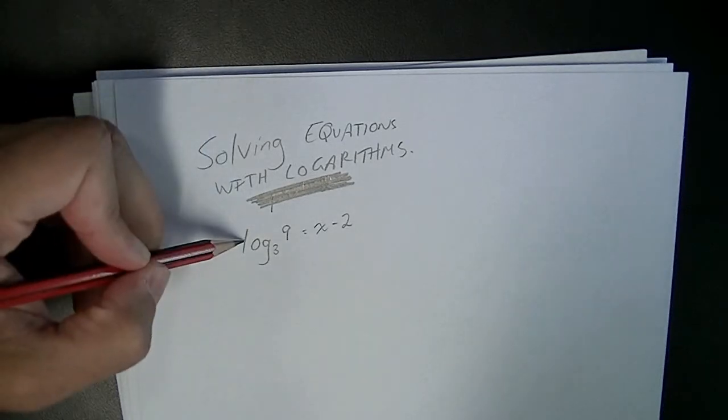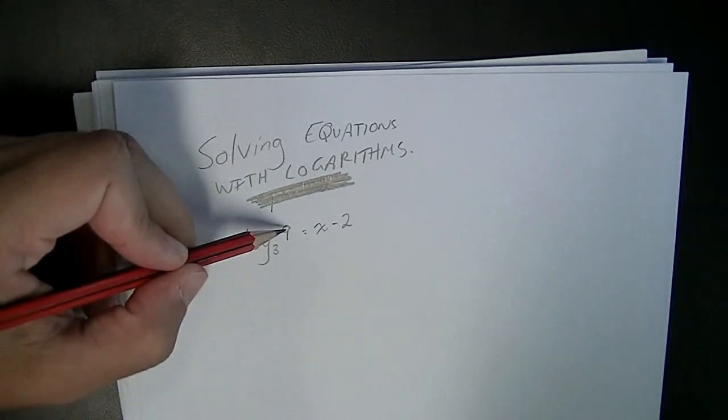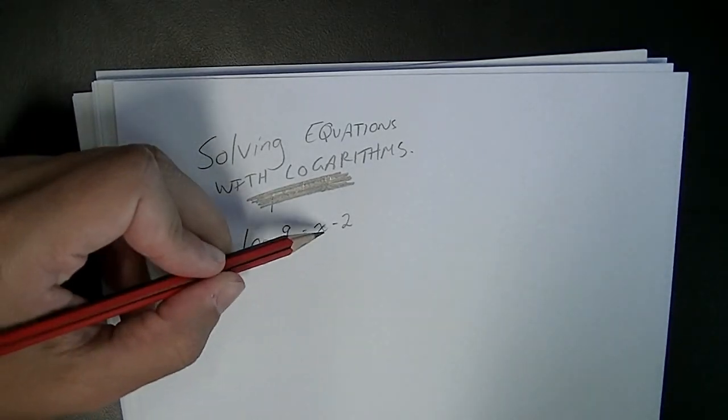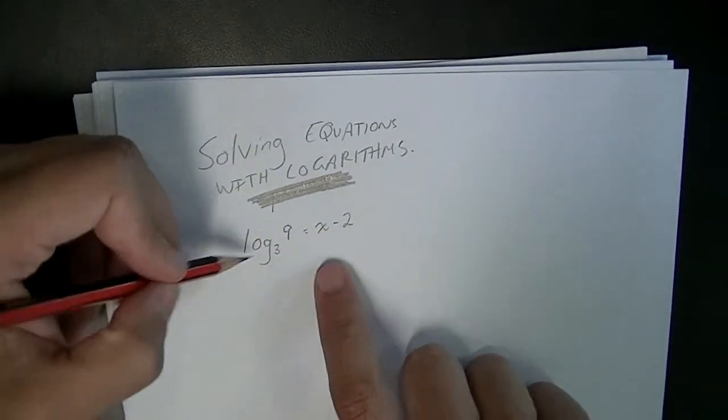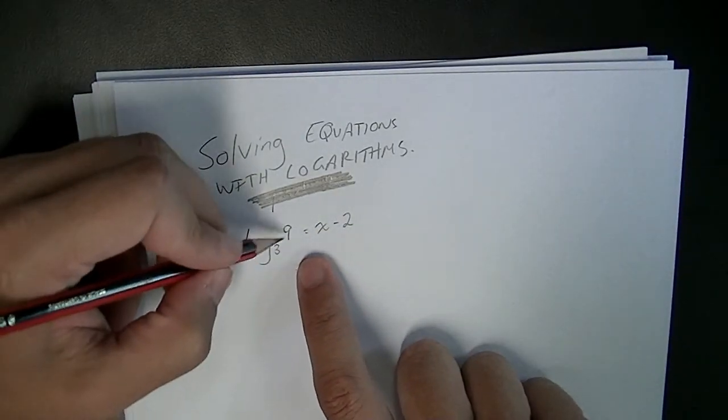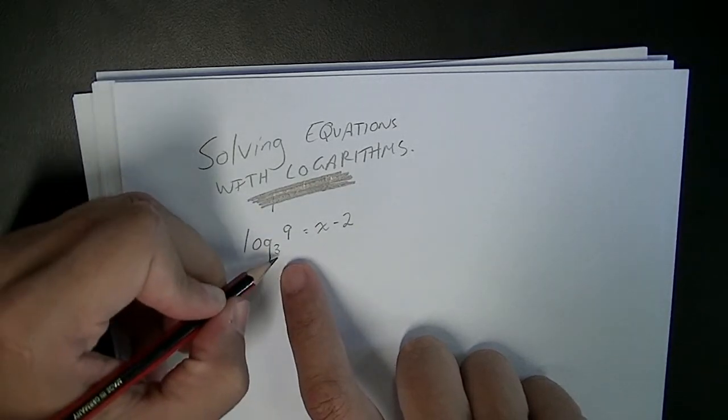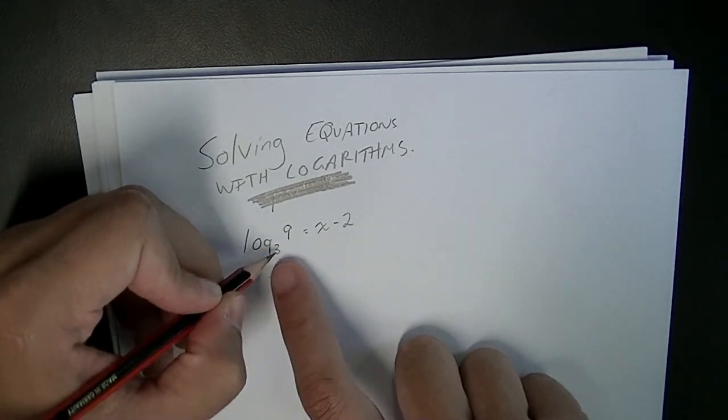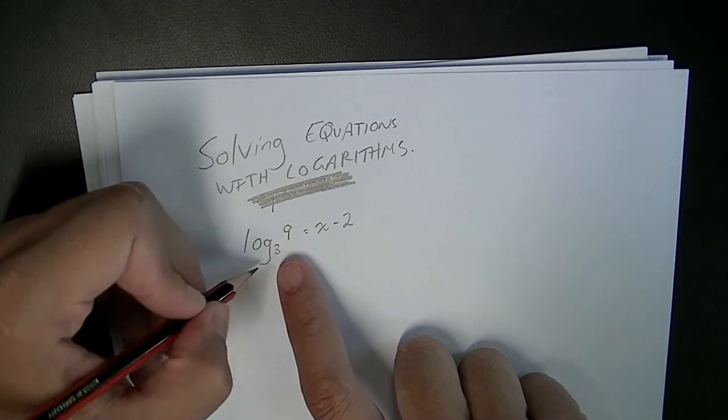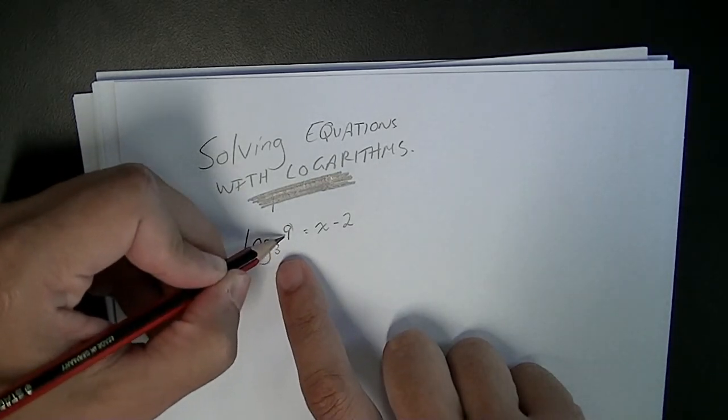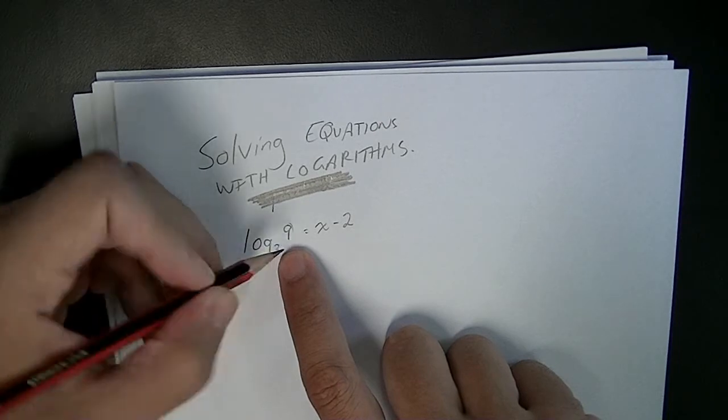Now this equation is log base 3 to the 9 is equal to x minus 2. Now you really want to do something with these logs. When you look at base 3 to the 9, you should be able to rewrite this at least, you can see it's a square number.